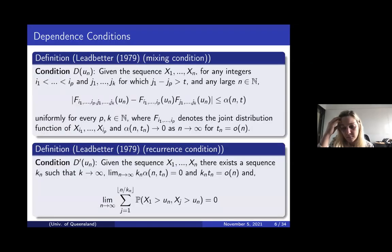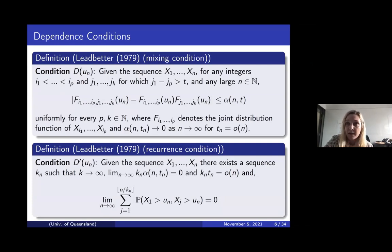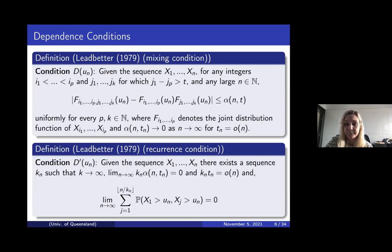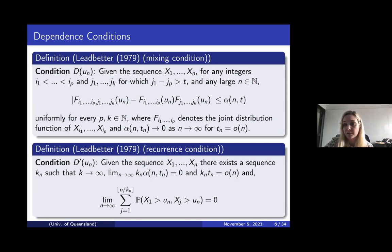When we talk about time series or dynamics, it's really hard to say that something is independent, because most of the time it's not. So it's natural to ask: can we relax the requirement for independence and replace it with something else? Ledbetter in 1979 showed that if x1 through xn is stationary and two dependence conditions hold, we can still get an extreme value law. The first condition is a mixing condition, something like decay of correlations, and the second is a recurrence condition which bounds the probabilities of returns of these maxima.